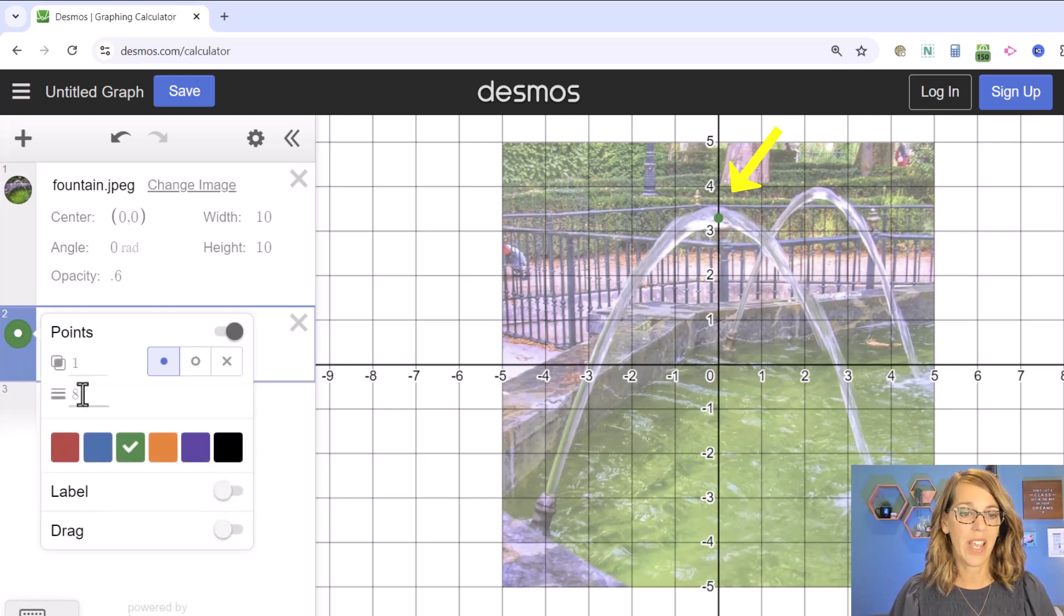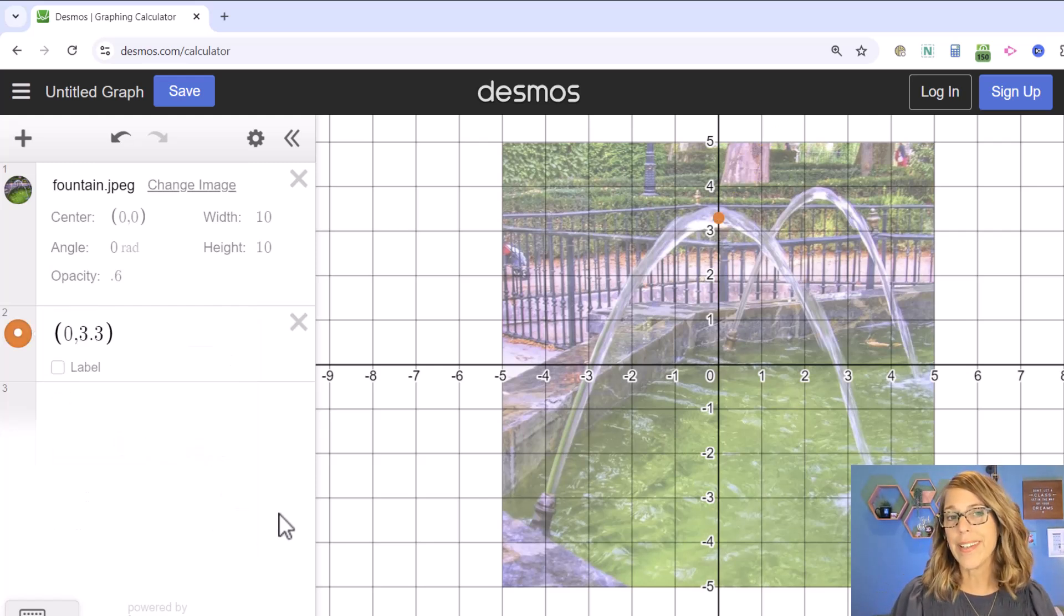Let me go ahead and click and hold and then let's just make this point a little bit bigger, say 12, so you can see that better and I'll make it orange. So I've got a pretty good idea of what my vertex is.